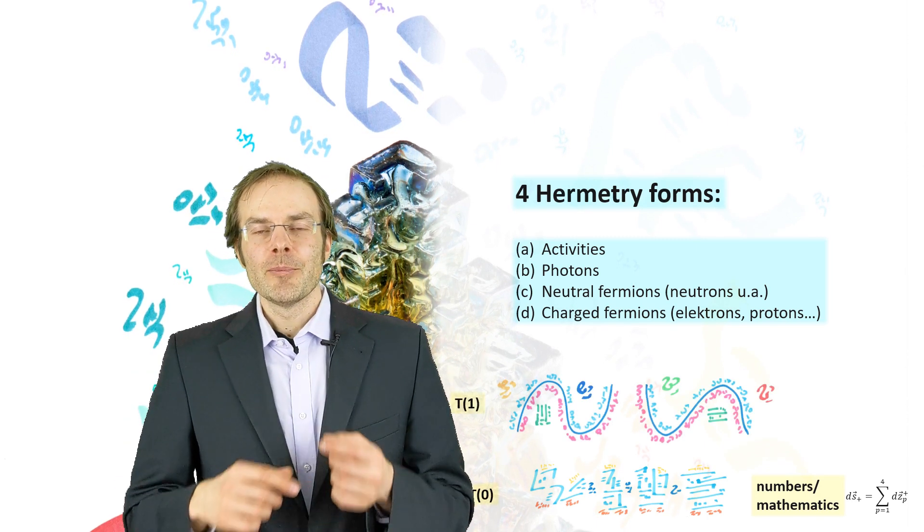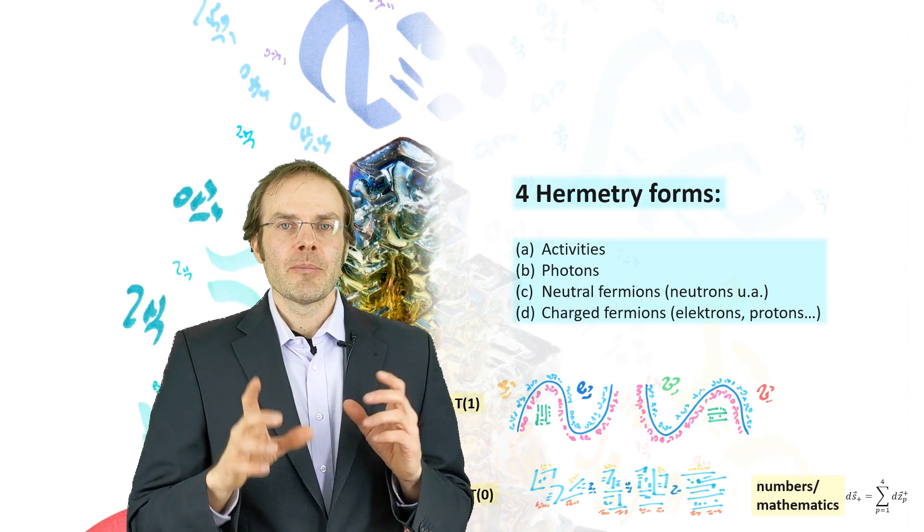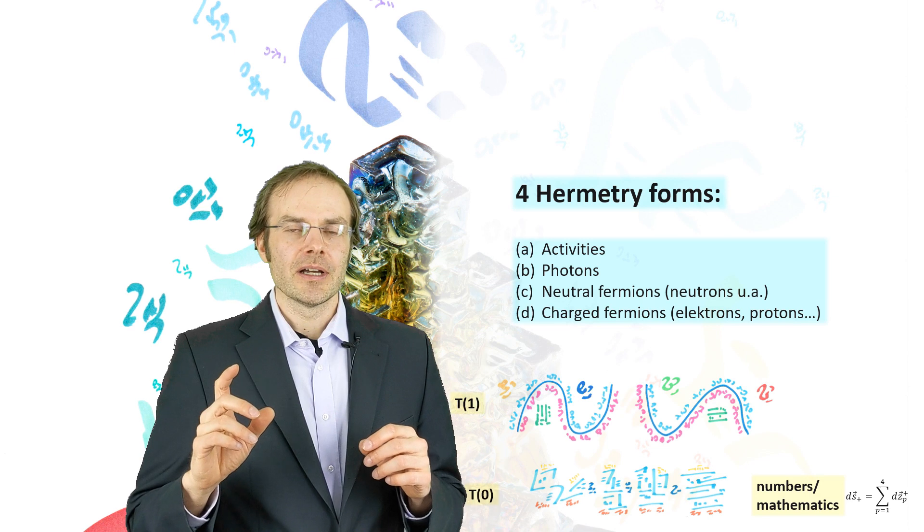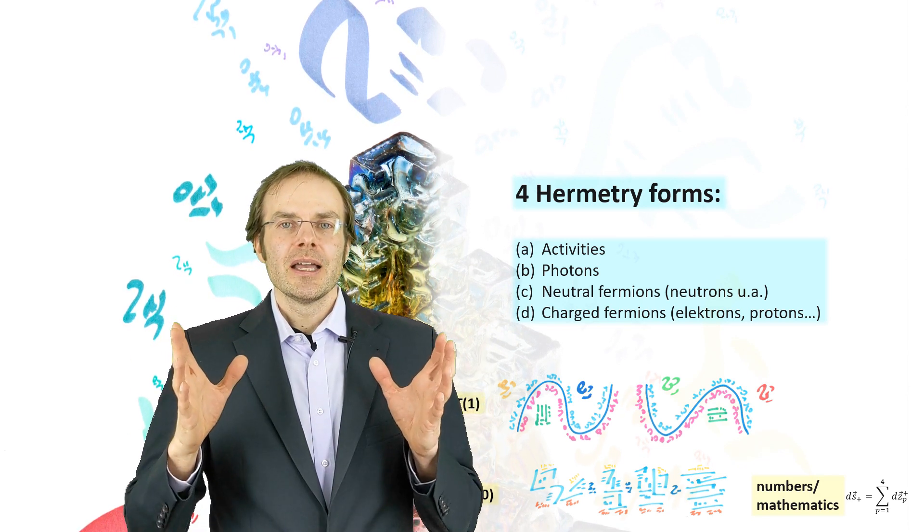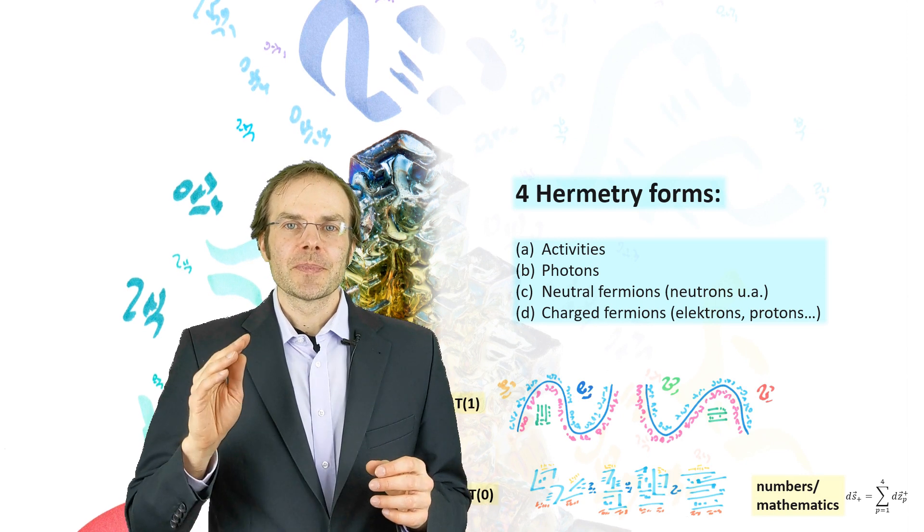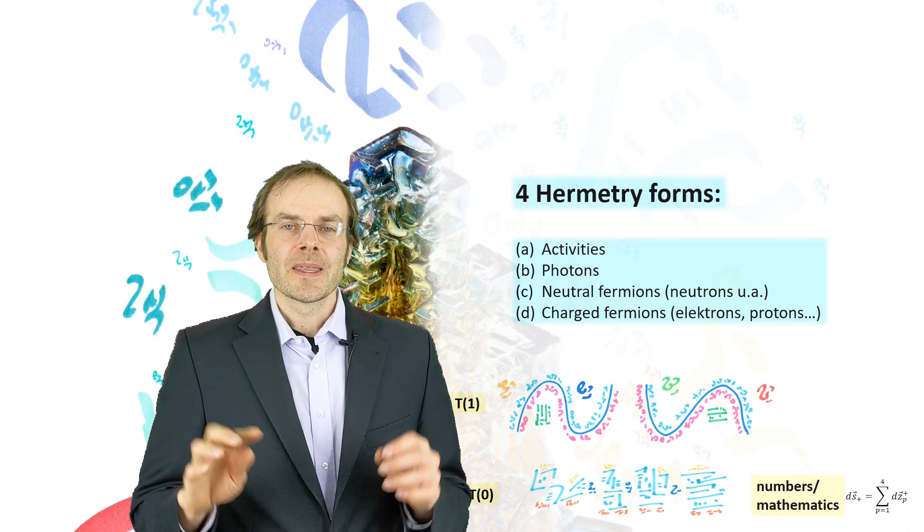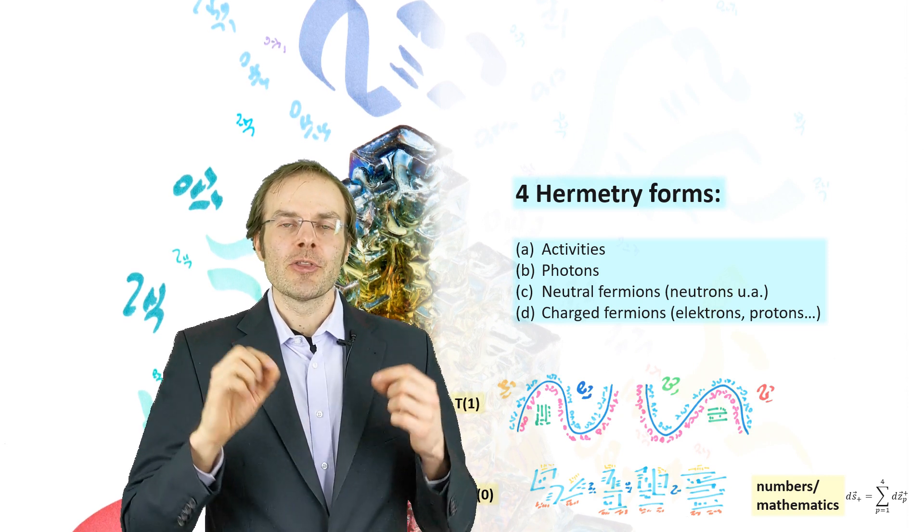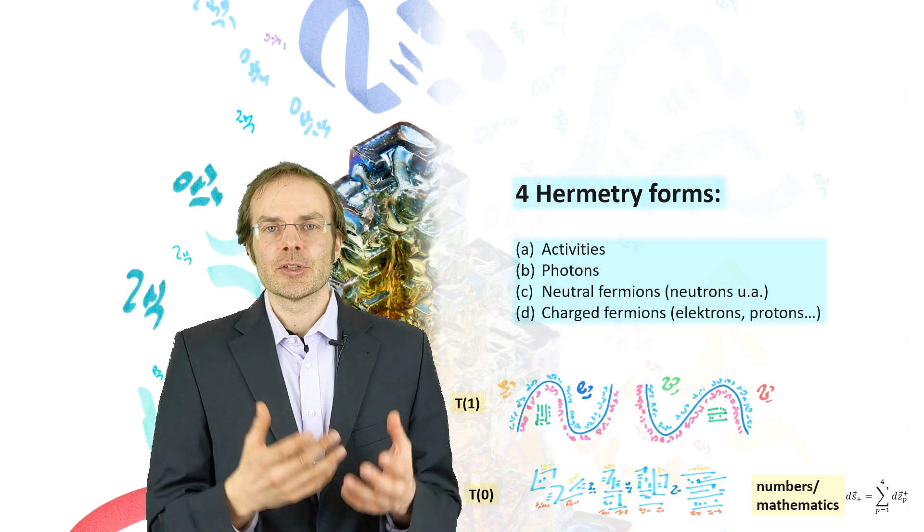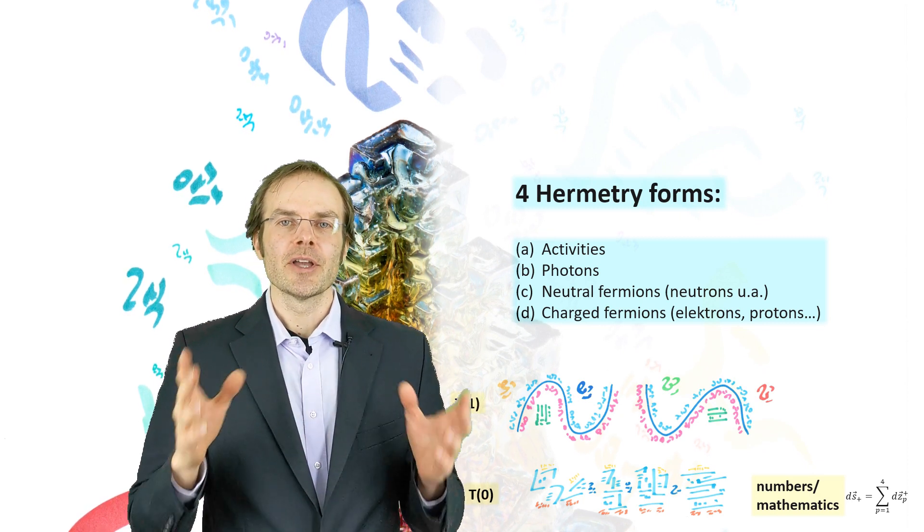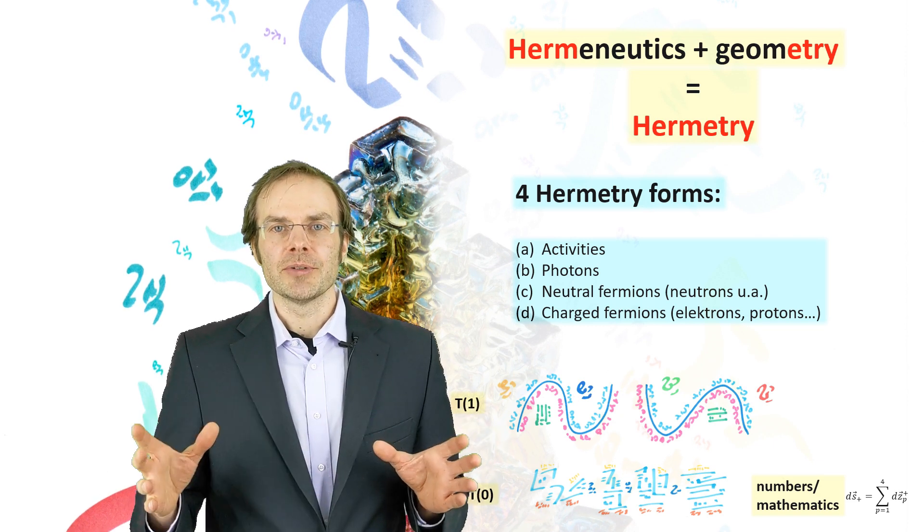These four hermetry forms form a new structural level which we call totality one. Why is that? Because a new idea must be introduced. Just from the idea of the metron and the according structural fluxes, you cannot come to the conclusion that there are four stable states. A new idea has to be added here which cannot be derived from the idea of the metron itself.